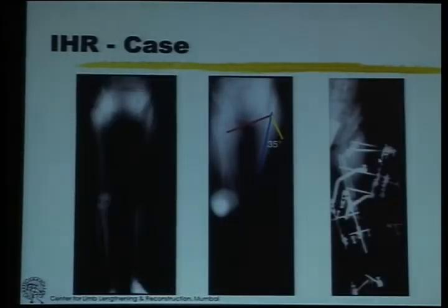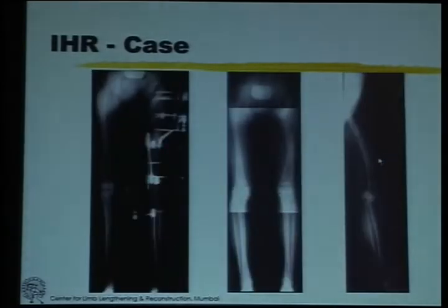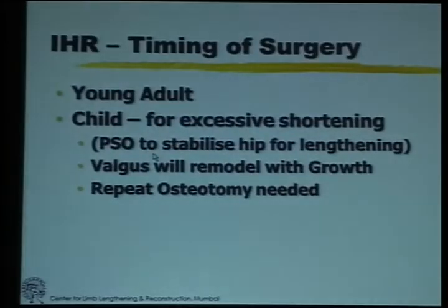Here is a case. What you see on the left is a high-riding trochanter. In the middle, you see the single leg weight-bearing x-ray and the osteotomy on the right side. This is lengthened through the lower osteotomy to get everything straight.